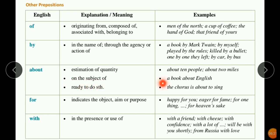By means through the agency or action of - this book was written by Mark Twain, she was killed by a bullet, one by one they left, she went to Kolkata by train. About means approximately - there are about ten people. On the subject - this is a book about English. Ready to do something - the chorus is about to sing. Next, for indicates the object, aim or purpose - I am happy for you, eager for fame. With means in the presence or use of - I should play with a friend. The letter was written with pain.